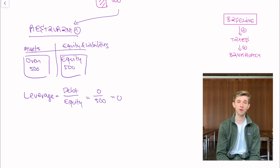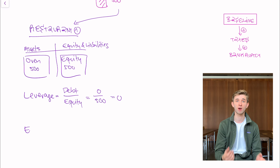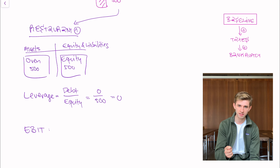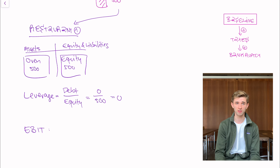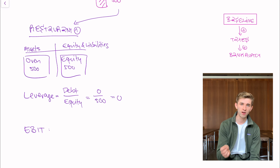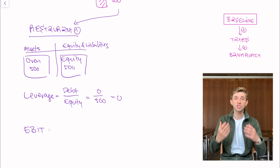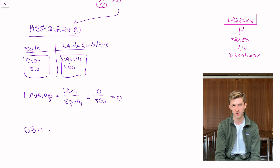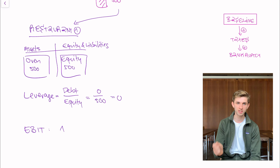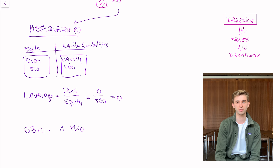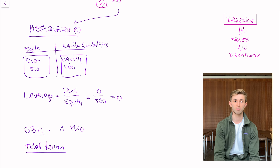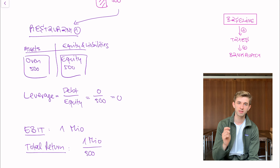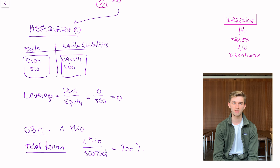What happens at the end of the year? We generate 1 million in profit — I call this EBIT, earnings before interest and taxes. In our baseline model we don't have taxes, so that's zero, and restaurant one has no interest payments since it has no debt. This means the EBIT equals the money going to equity holders as dividends. The total return on investment for restaurant one is 1 million euros divided by the initial investment of 500,000, which is 200%.